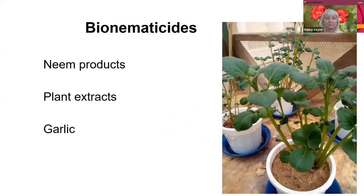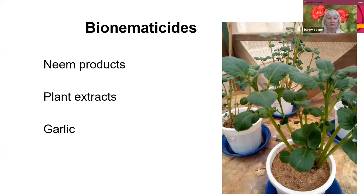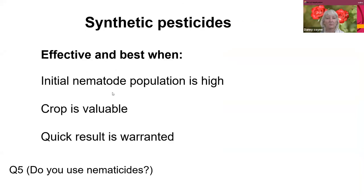Then we have chemical management. Amongst them we have some bio-nematicides, which are also coming up since there are not that many nematicides on the market. Bio-nematicides are useful because they're less toxic, but they might not always work as well as we want. There are neem products, various plant extracts, and then there's a newer one — garlic Nemguard — which is worth trying. We're also looking at how well garlic works against potato cyst nematode. Synthetic pesticides — Daisy will talk more about that — are very useful when populations are high.